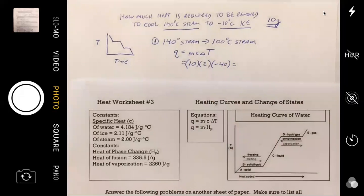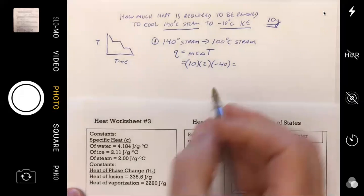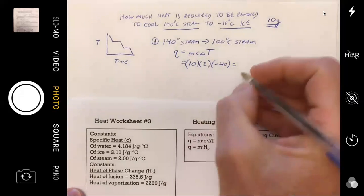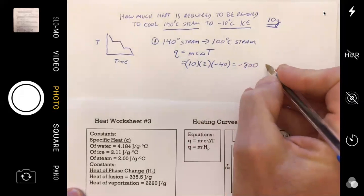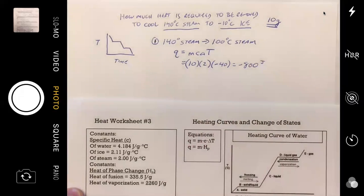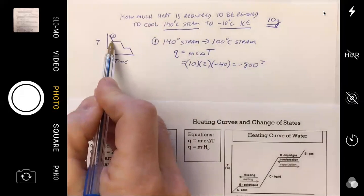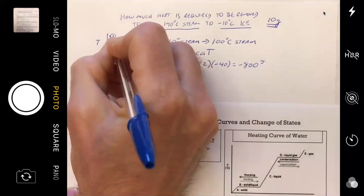Now I'm hoping some of you guys are off to the races. Does anyone have that actually calculated already? Negative 800. Can I get a verbal confirmation that that's correct from a couple of you guys? Yeah. This is just the first step. All we've done is cool it from 140 down to 100 and now we have to do the second step.